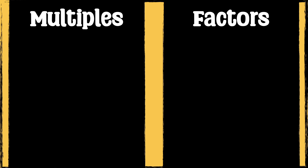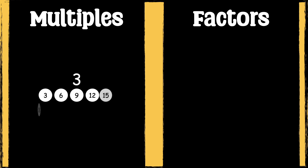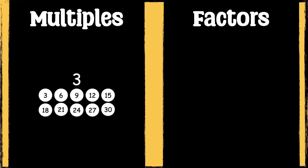Multiples are numbers that you get when you multiply a number by another number. For example, the multiples of three will all be numbers that are in the three times table. Factors are numbers that you can multiply together to get another number.